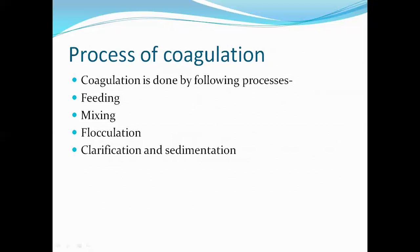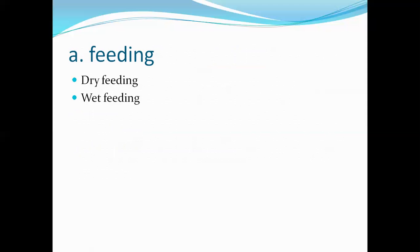Now see the processes of coagulation. Coagulation is done by four following processes: the first is feeding, the second is mixing, the third is flocculation, and the fourth is clarification and sedimentation. Now, first we saw sedimentation with coagulation — adding a coagulant to the sedimentation process. Now we are going to discuss only the coagulation process and its four sub-processes.